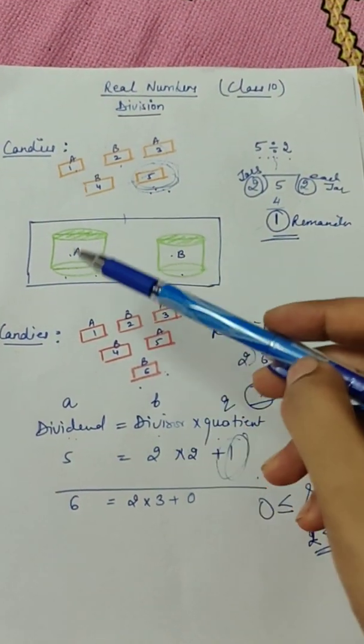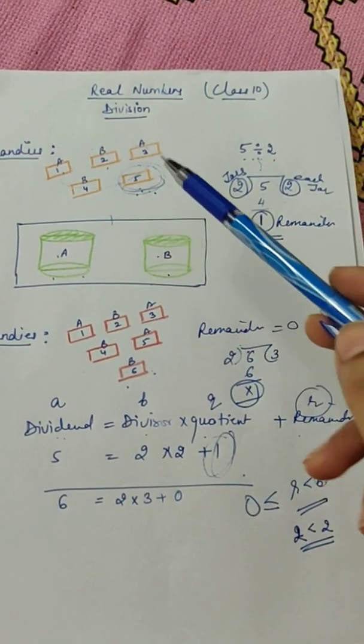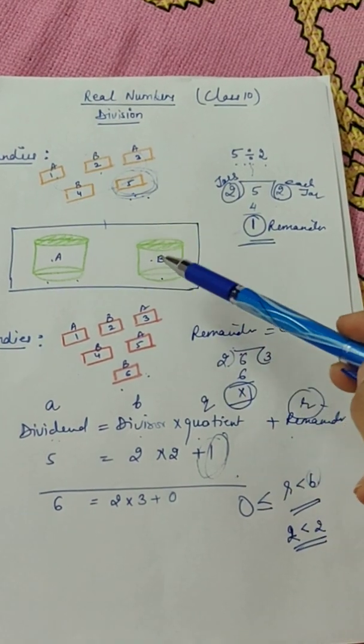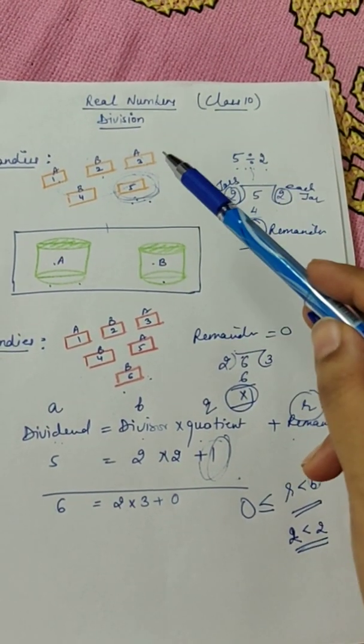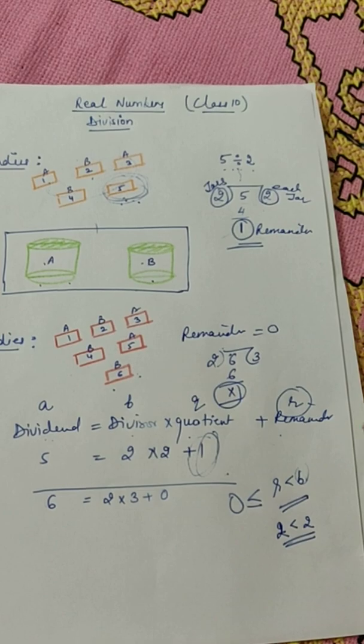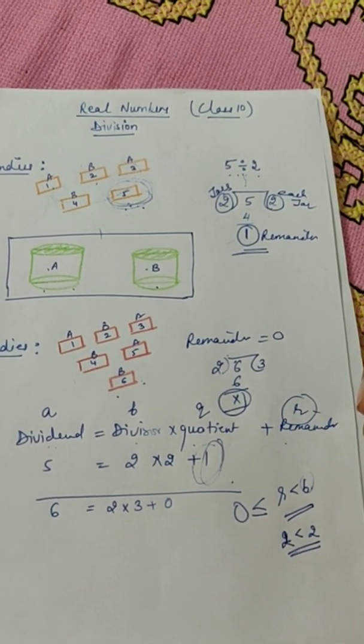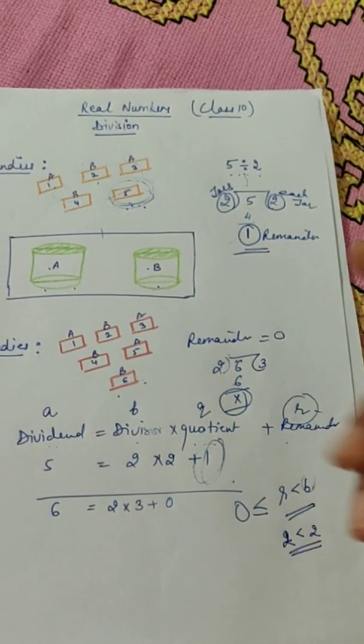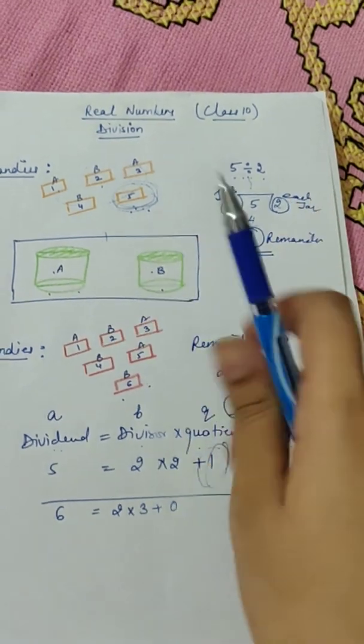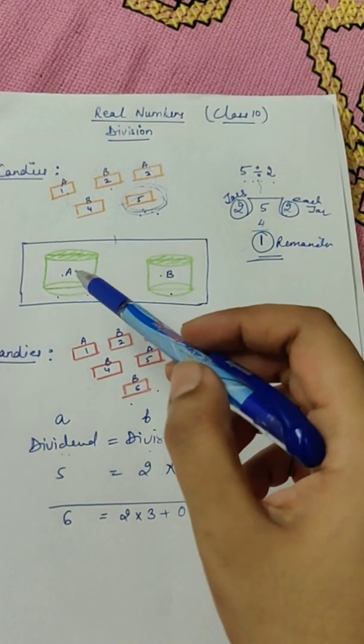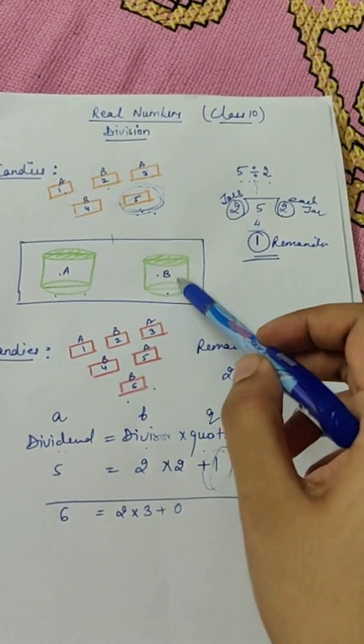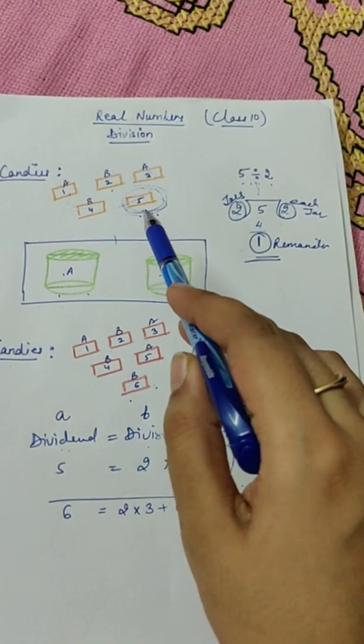We will put one candy in A box, second candy in B box, third candy in A, fourth in B, and the last one is left out because it is alone. No pair is there. So we can't divide the single candy in two boxes equally. So therefore we can say that each box will contain two candies and one is left out.